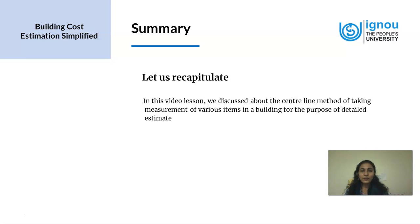Now we have two methods of measurements that we have learned. In the previous lesson we learned about the long wall short wall method, and in this video lesson we learned about the central line method. In the central line method we also saw how we have to take special care for junctions and how the corners are taken into consideration for the purpose of measurements.